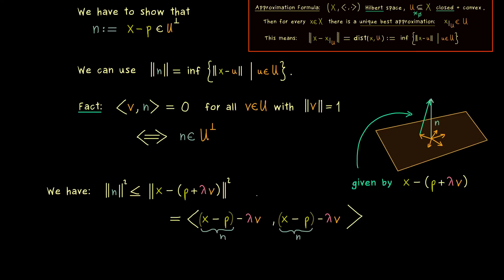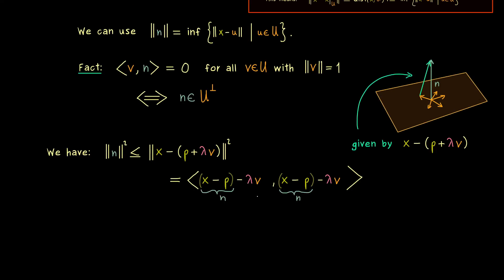And I think I can quickly do that, because you already know how this works. Namely the first part is the norm of n squared. The second part is minus lambda with n and v. And the third part is similar, it's just the complex conjugate of it. And finally we have lambda squared in the absolute value times the norm of v squared. And there you see why the assumption that v should have length 1 is helpful, because then this term just goes away with 1.